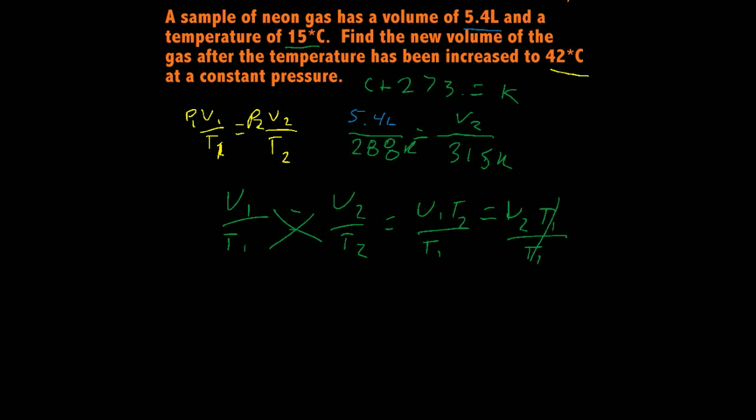So let's just plug in our numbers and go. So we have volume 1, which was 5.4 liters, times our temperature 2, which is 42 degrees Celsius, which turned into 315 degrees Kelvin.